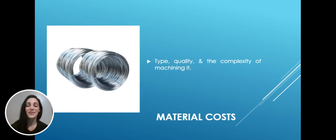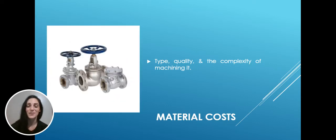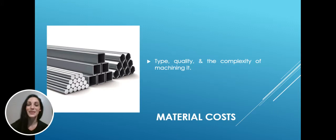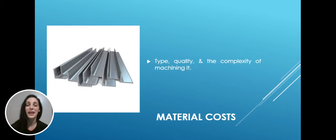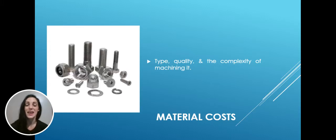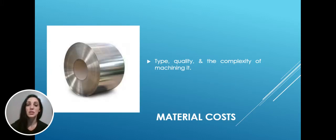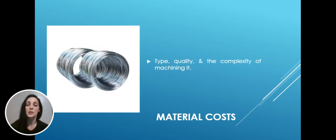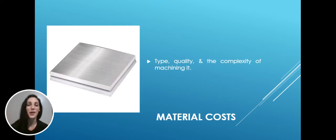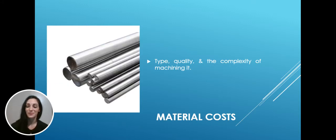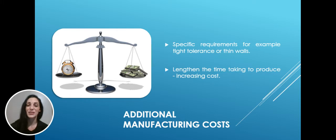Next, it's worthwhile considering the material cost. The raw material cost needs to be factored in. This price will depend on the type and quality of the material that you use, along with the complexity of machining it. Now, not every material can be machined in the same way, so again it's useful to have a chat with your supplier to see which material would fit your project best.